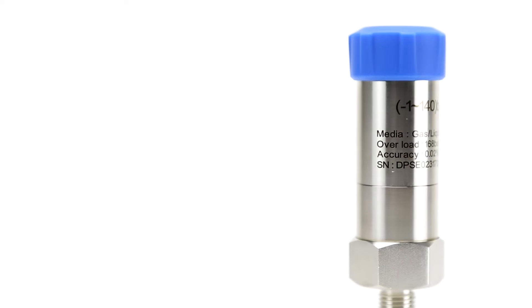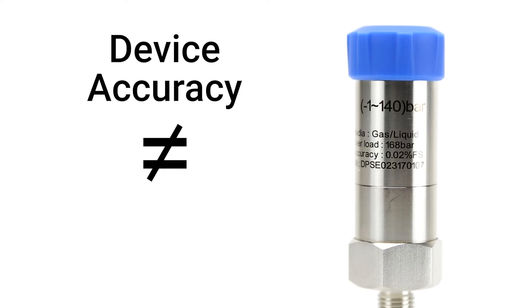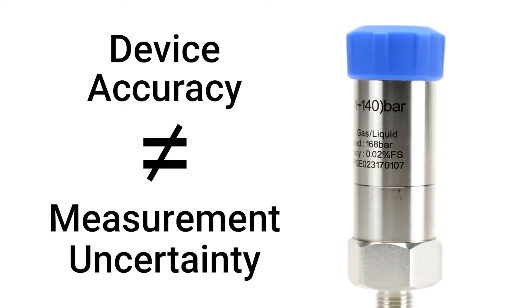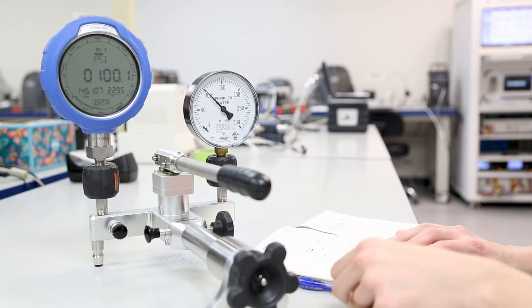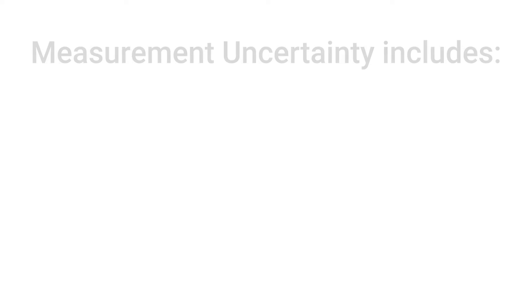Due to the way manufacturers specify accuracy with a numerical value, device accuracy is often confused with uncertainty in a measurement. When measuring a value, many variables can affect the closeness of the measurement to the true value. These combined variables,